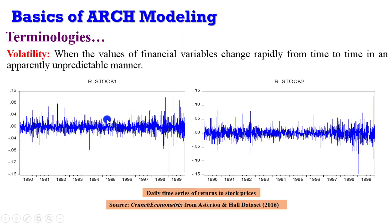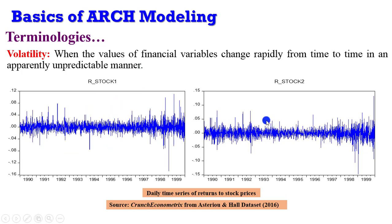Now, some terminologies. What do you understand by volatility? It simply means that the values of financial variables change rapidly from time to time in an apparently unpredictable manner. This is one of the reasons why you must use high-frequency data. Here you can see the movements of two stock returns — highly unpredictable. This is a daily series for both stocks, highly unpredictable to any investor. This is a volatile series: Stock 1 and Stock 2.